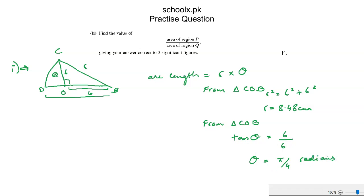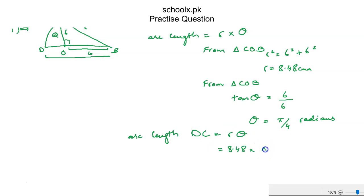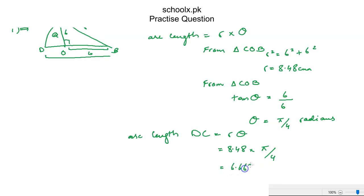We use radians since we are using the formula R times θ. R is 8.48 and θ is π/4. π is approximately 3.142. Computing R times θ gives us 6.666 cm for the arc DC.